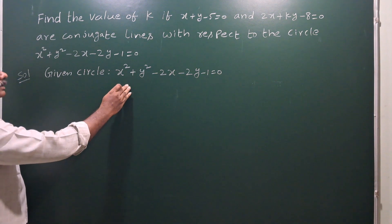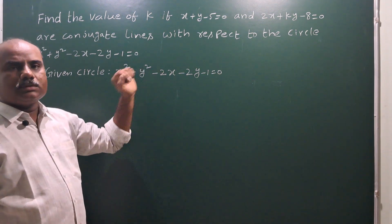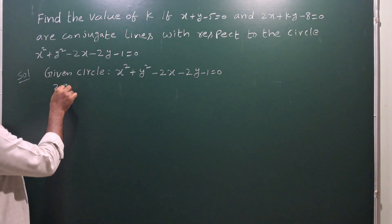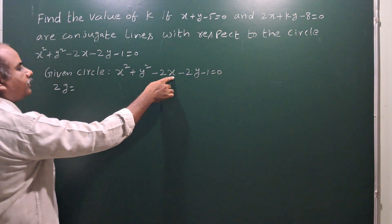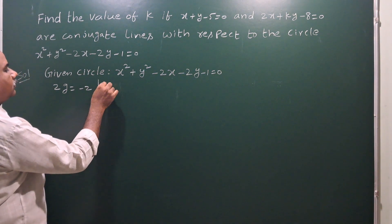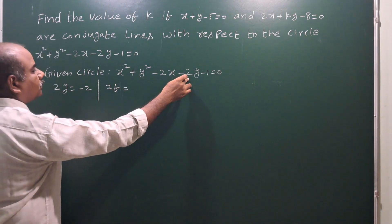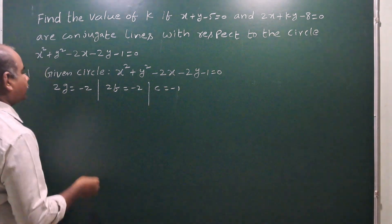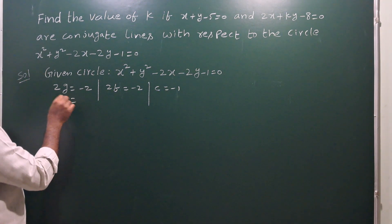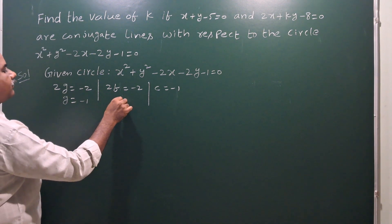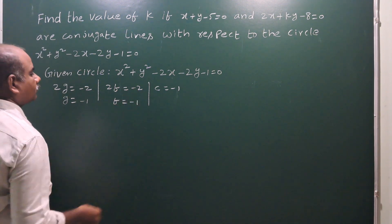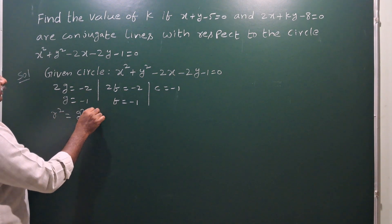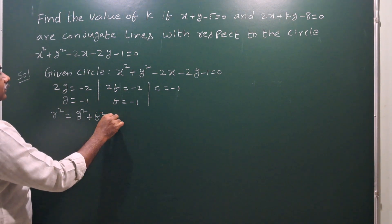First of all, write the given circle and then compare with the general form. So 2g is the coefficient of x, which is minus 2. Next, 2f is the coefficient of y, which is also minus 2. The constant is equal to minus 1. Therefore g is equal to minus 1 and f is equal to minus 1. Next, find the value of r squared: r squared equals g squared plus f squared minus c.